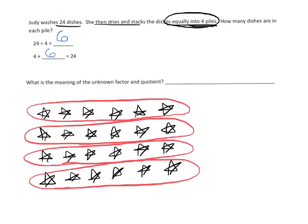And so our answer is 6. There's going to be 6 dishes in each pile because we have four groups of 6. And what is the meaning of the unknown factor and the quotient? So in this case, the unknown factor right here, or the quotient right here, represents the number of dishes in each stack.